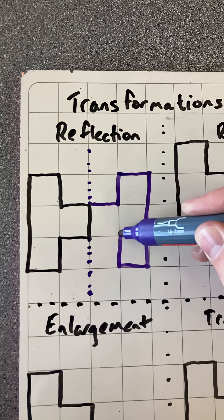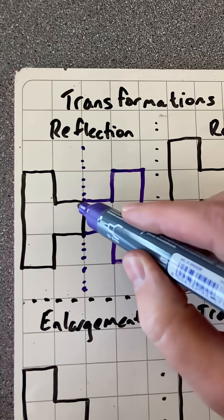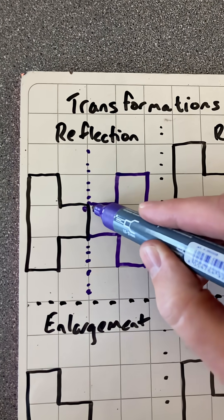It doesn't change the size of the shape, but it changes the way it's facing. So for instance, if there was a dot there, that dot would then have moved there.